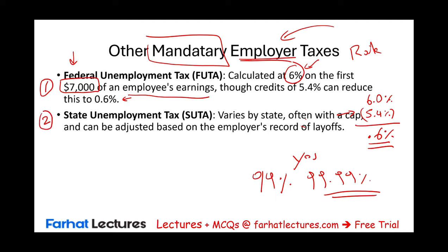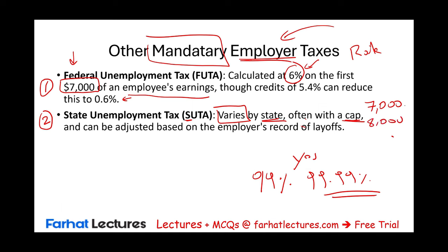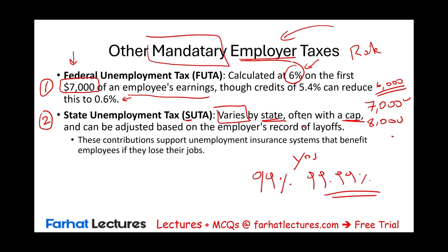SUTA is the state unemployment tax. Because it is a state tax, it varies by state — each state has a different rate and a different income cap. For federal unemployment, the cap is $7,000; for state, it could be $6,000, $7,000, $8,000, or another amount. The rate can also be adjusted year to year — for example, 4% one year, 5% the next — based on a merit system that considers how much unemployment insurance your employees use.